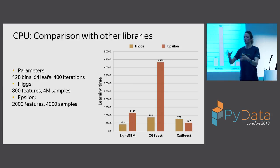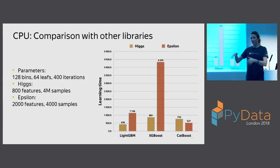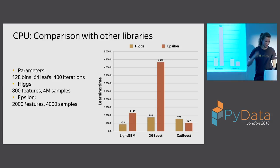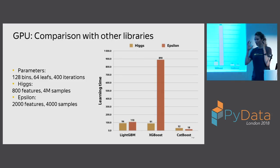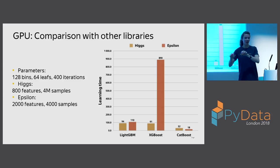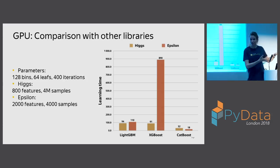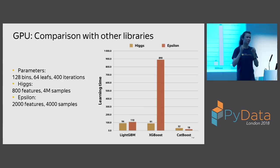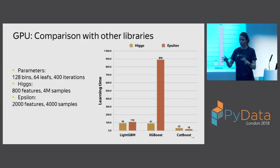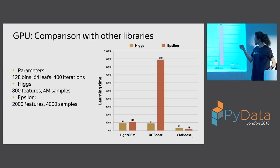Regarding GPU training, the main thing is it's super easy to use. You just pip install CatBoost and you already have GPU support. There is a fit function with a parameter 'task_type' — you set task_type equal to GPU and you have GPU training. CatBoost is the only library that gives speedups on older GPUs like K40 or K80, so for example in Google Colaboratory where GPUs are free, you will get a speedup. CatBoost GPU training is about 20 times faster than XGBoost and about three times faster than LightGBM.